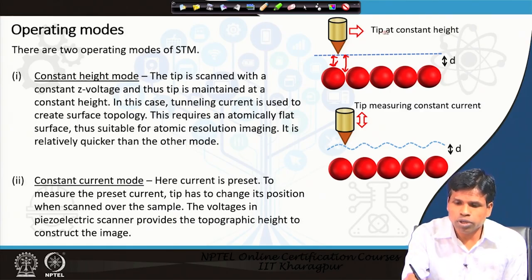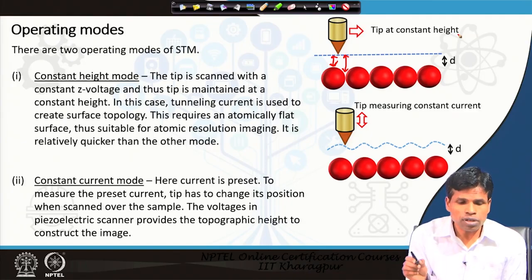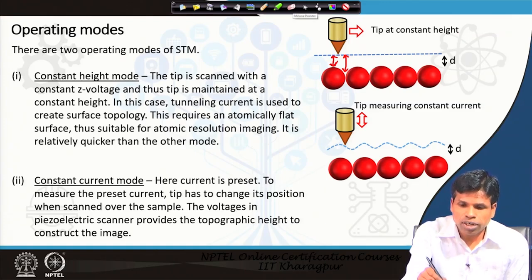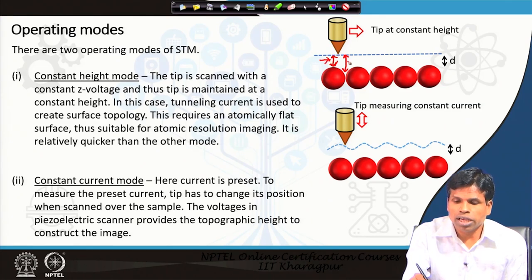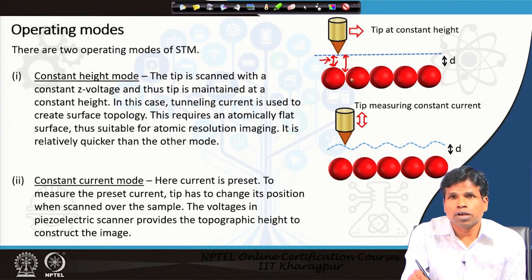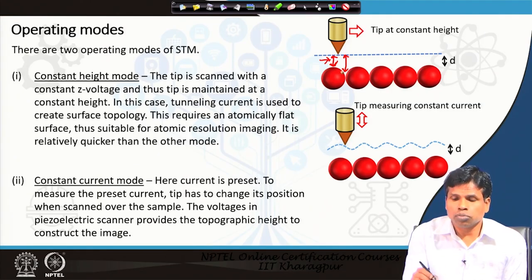In constant height mode, the tip is at constant height and scanned above the sample. We get different tunneling currents — high tunneling current where the distance between tip and sample is small, and low tunneling current where the distance is larger. This tunneling current is used for imaging purposes. So we get the surface topology from the tunneling current data in this case.